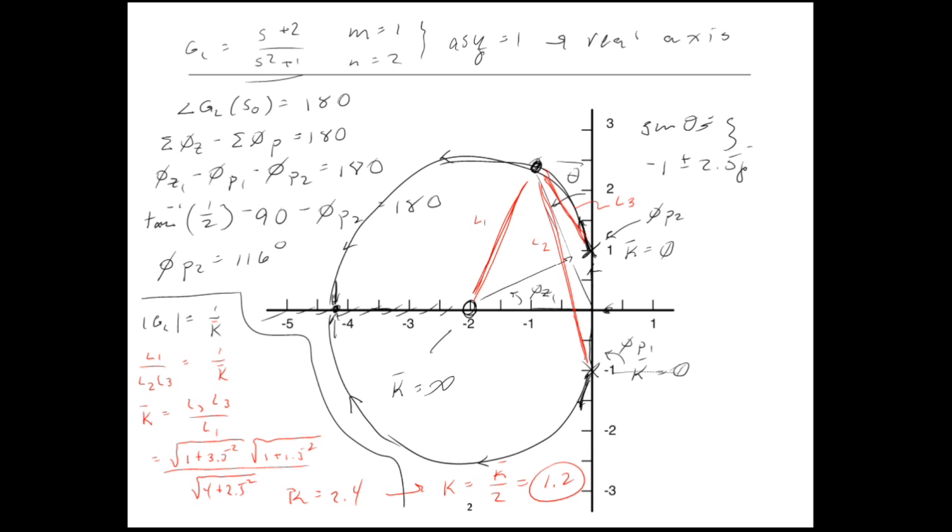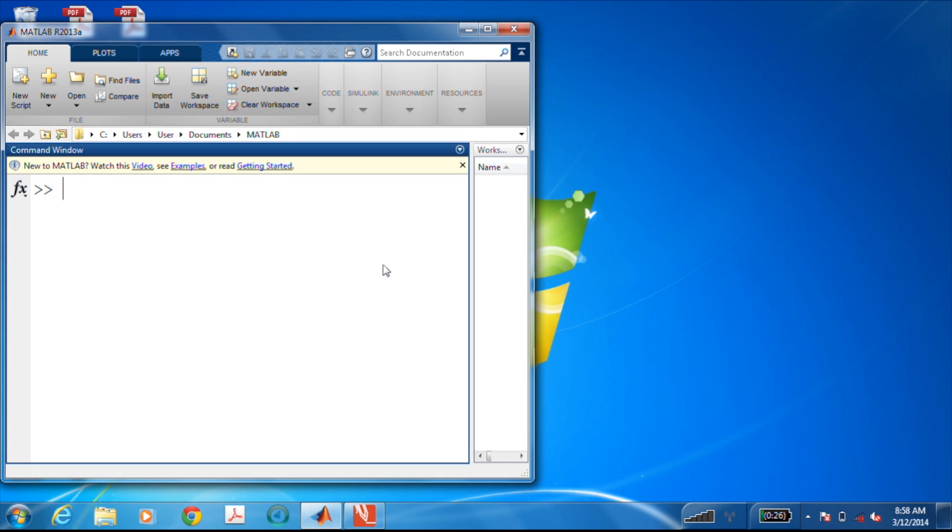So here is our loop transfer function, call it GL, use the TF command. And it was 2.4. I'm not going to factor that quantity out in this. So the root locus we create here will be the root locus that is actually for K, not K bar. And we'll just use RL tool.